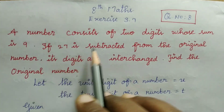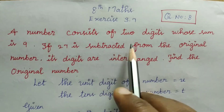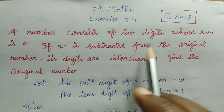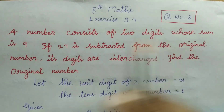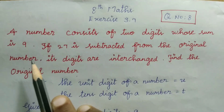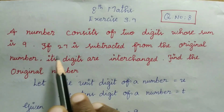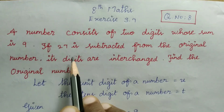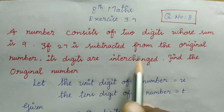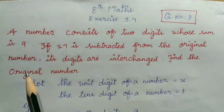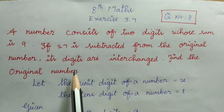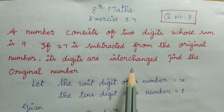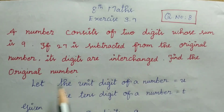A number consists of 2 digits whose sum is 9. If 27 is subtracted from the original number, its digits are interchanged. Find the original number.